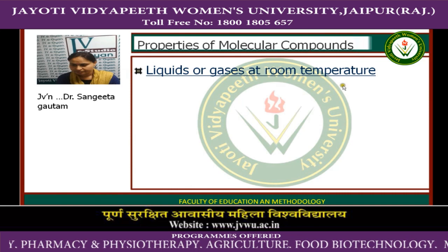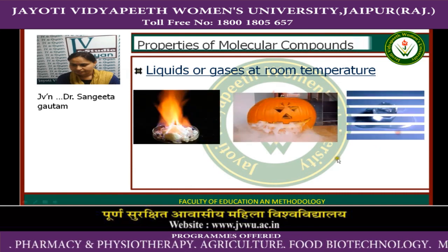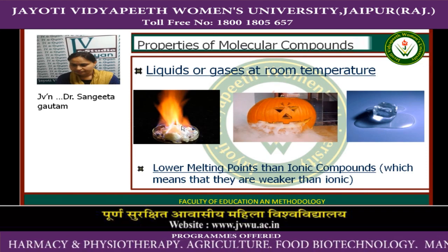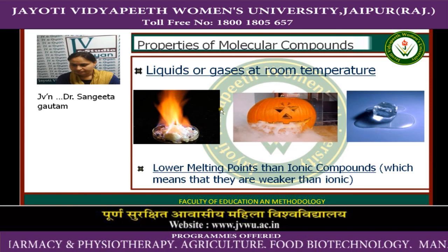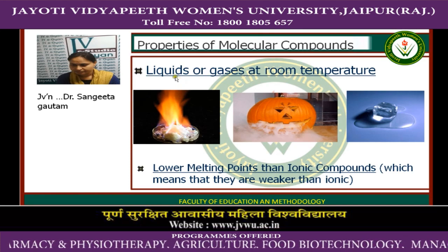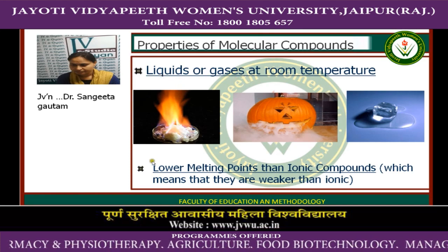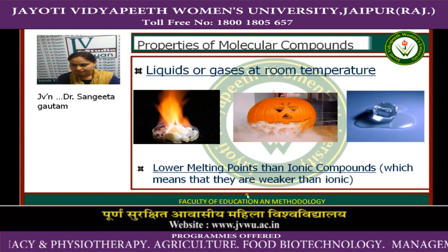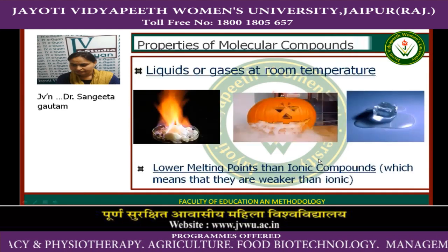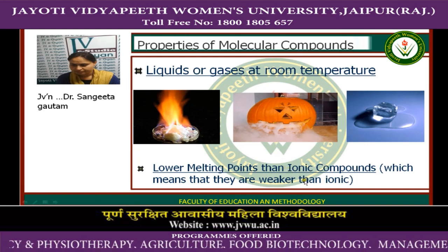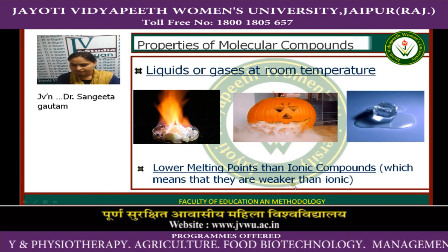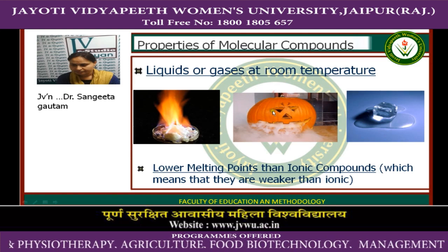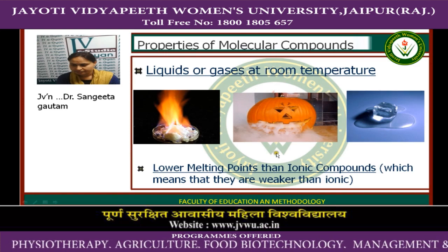Properties of molecular compounds: they are liquids and gases at room temperature because covalent bonding is weaker than ionic bonding, so the physical state of covalent compounds is liquid or gas. They also have lower melting and boiling points than ionic compounds, which further shows that covalent bonding is weaker than ionic bonding.